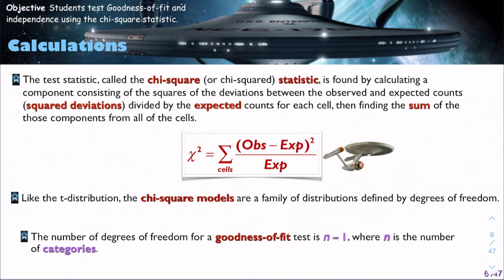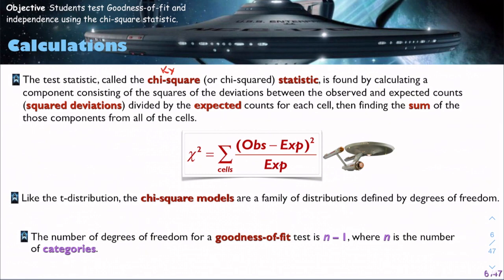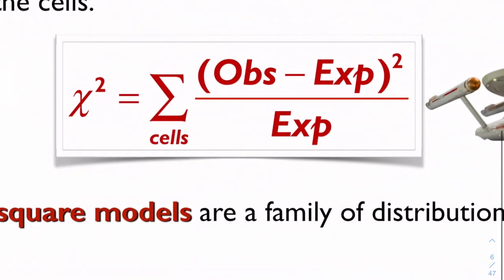The test statistic is called chi-squared. Think the word sky, but without the S. So chi-squared. It's found by calculating the components consisting of the squares of the deviations between the observed and expected counts, and dividing by the expected counts for each cell. And then we sum them all up of the components from all the cells, and this is what it looks like. If you know this is the sigma notation, sigma means summation.